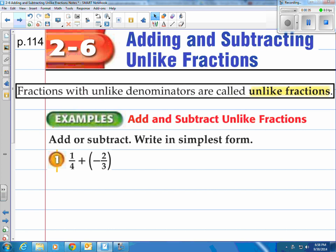So let's take a look at number one: one-fourth plus negative two-thirds. The bottoms are not the same. We need to convert the fractions into fractions that have the same denominator, the same bottom.